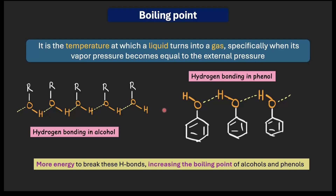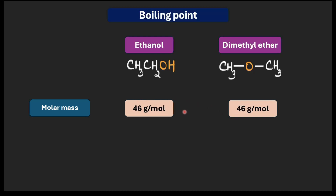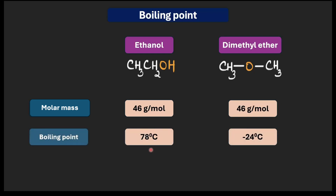For example, let's compare ethanol — a simple alcohol — with dimethyl ether, the simplest ether. Both have a similar molar mass of around 46 grams per mole. However, ethanol boils at around 78°C, whereas dimethyl ether boils at minus 24°C. This can be attributed to the weak attractive forces present in dimethyl ether — these ether molecules are held together by weak van der Waals forces, whereas ethanol molecules are held together by strong hydrogen bonding.